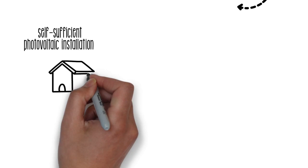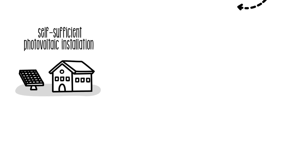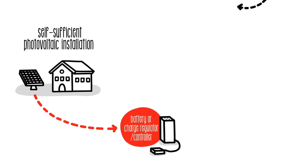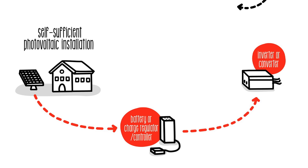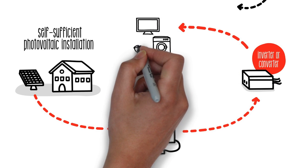In the case of a self-sufficient photovoltaic installation or an isolated photovoltaic one, it needs a battery or a charge regulator or controller. Then it needs an inverter or converter, which turns it into electricity to feed various electronic machines.